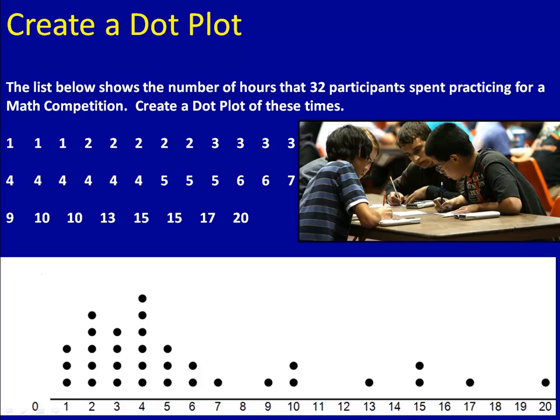Here's our completed dot plot. Notice that most of the people studied from one to six hours. That's where the largest number of dots are. The highest pile is over the number four. In fact, six of the people studied for four hours. We can see that there's a few people who studied quite a bit more. We see one person studied for 20 hours, one person for 17, and a couple of people who studied for 15 hours. But most of the people are in that group from one to six.